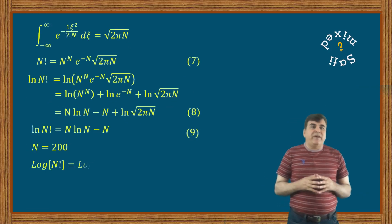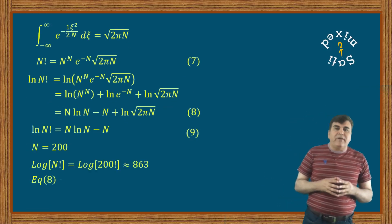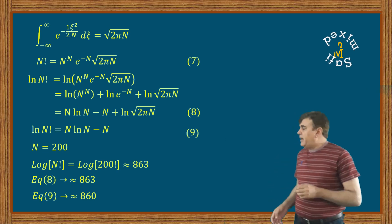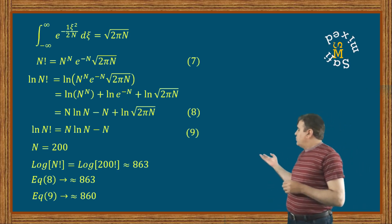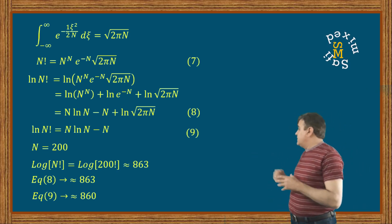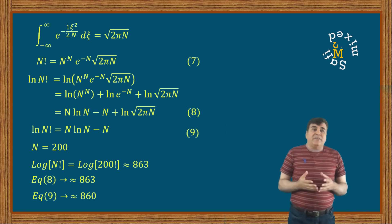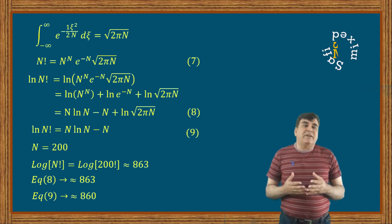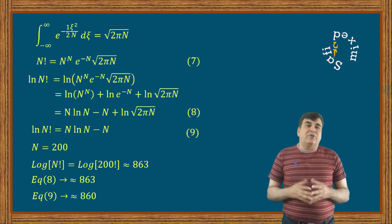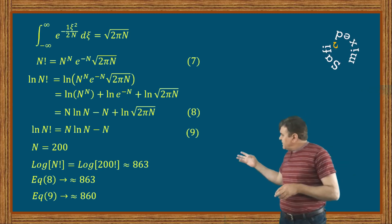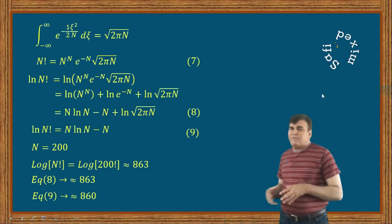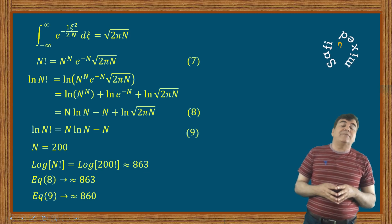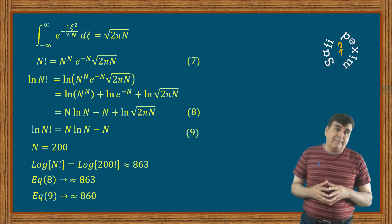Now let us evaluate the numerical value of these approximations and compare them with the actual result. We see that the actual result is accurately approximated by the approximation. This small difference further decreases with increasing value of n.